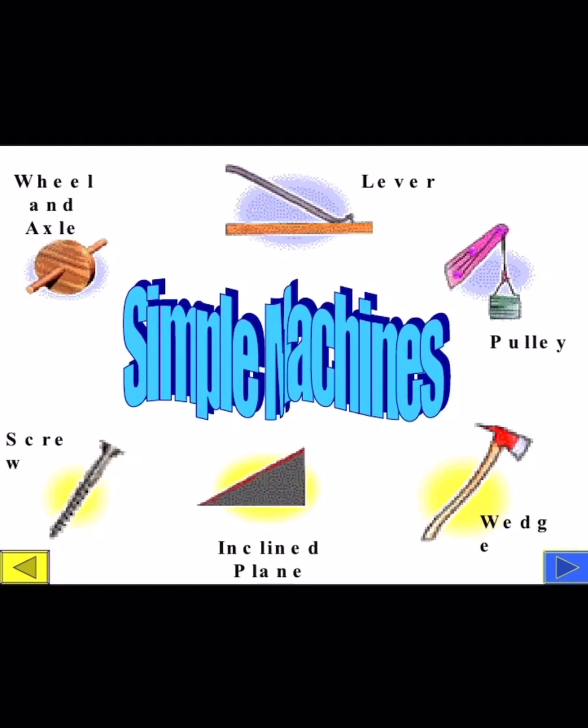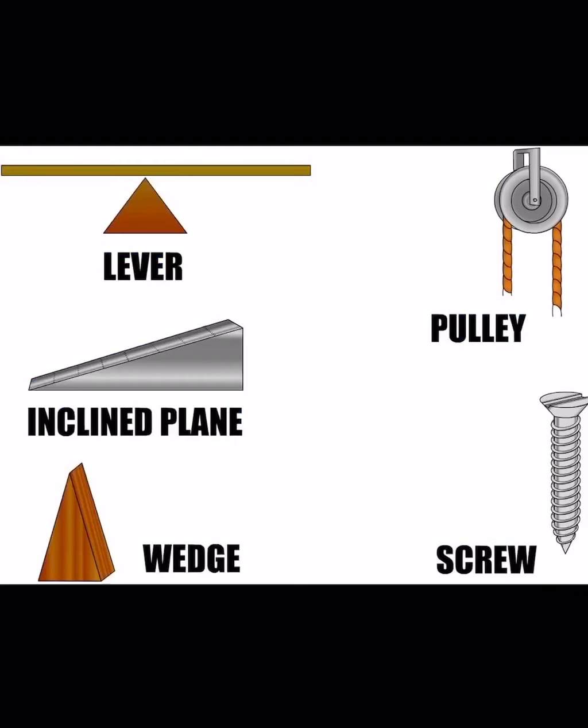A bird or claws also use it as a wedge. The bird uses its beak as a lever to carry food. A beaver uses its teeth as a wedge to cut or carry its food. So, simple machines make our work easier and faster.